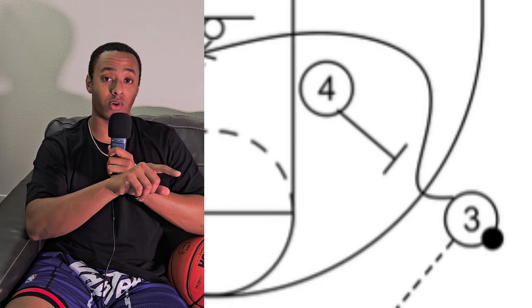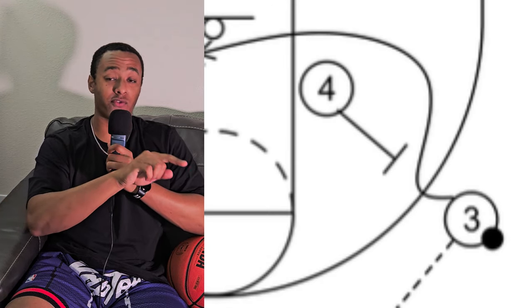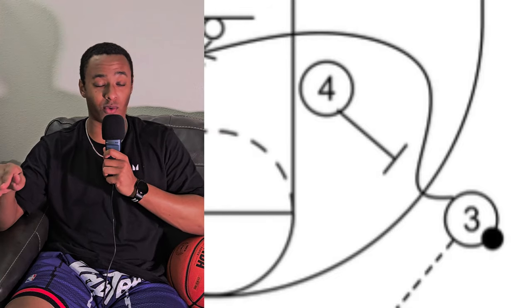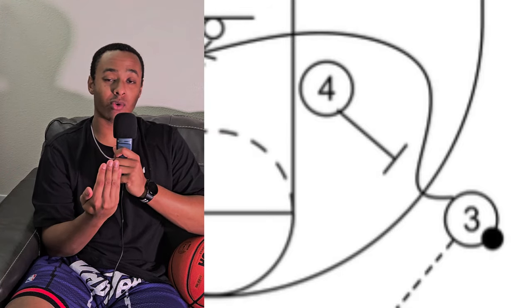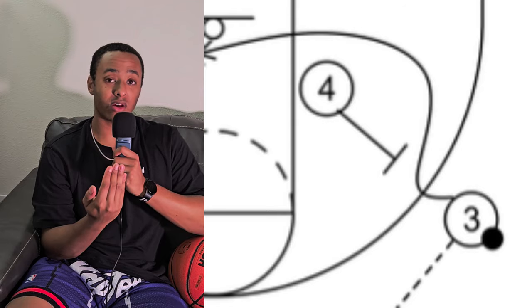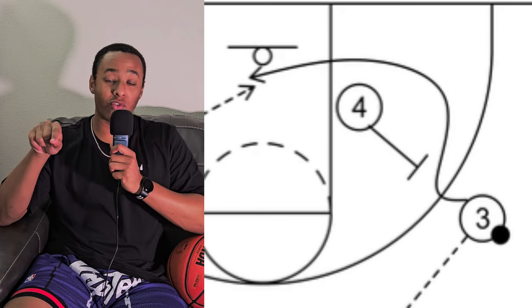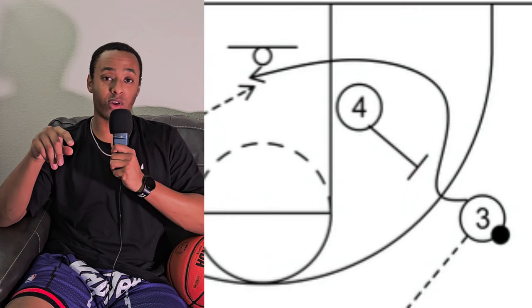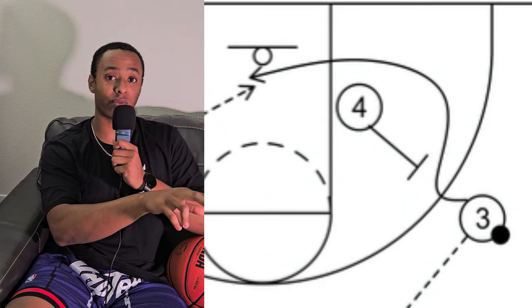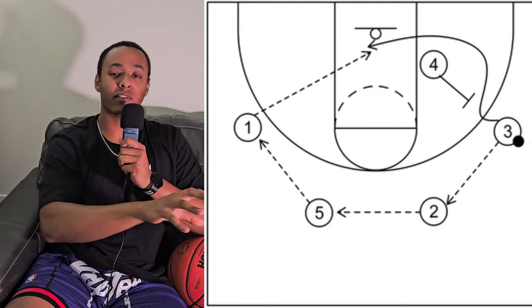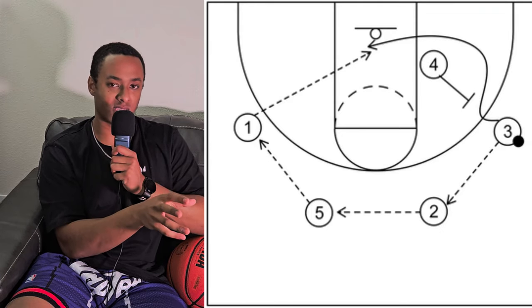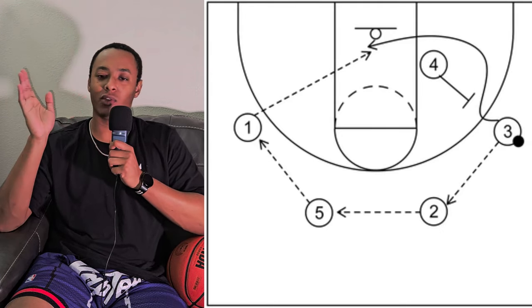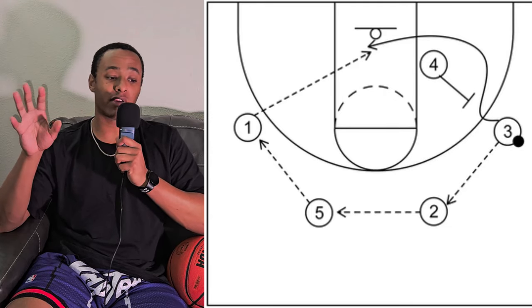The three — your small forward — is going to run around your four, your power forward, who has come closer to the perimeter or three-point line to set a screen on the defense. The small forward runs around or over that screen, curls in toward the rim, and meets the point guard's pass at the rim to finish. This is about as basic as a play can get — the only simpler version would be a single direct pass to the basket.